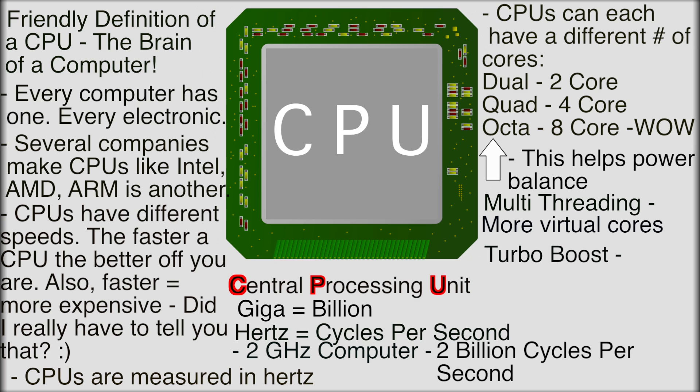Some CPUs — I think just Intel CPUs — support turbo boost, which is basically safe overclocking. Overclocking is when you go into the BIOS menu and take the CPU to higher limits than it was designed for. Intel calls their safe-to-overclock line of CPUs unlocked CPUs. Turbo boost is like overclocking but safer — it only overclocks when you need it. For example, if you're rendering a video in Final Cut Pro or Adobe After Effects, it will overclock to a higher speed to get the job done quicker.